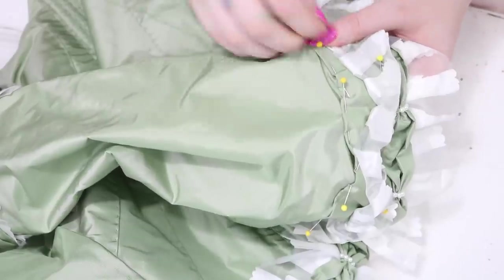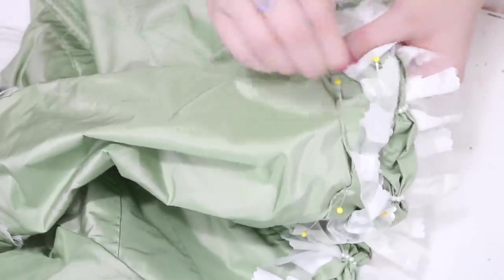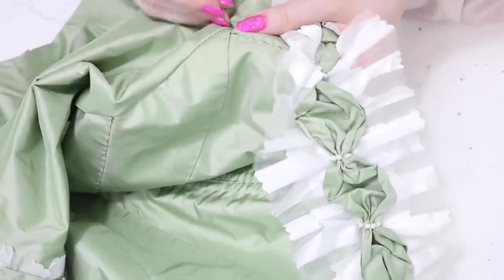This part of the sleeve was sewn on by hand, using tiny slip stitches. Though mine were, admittedly, not the prettiest, since I knew ruffles would cover them. That is the downside of ruffles. They cover things, and I know they cover things, and sometimes that makes me lazy.